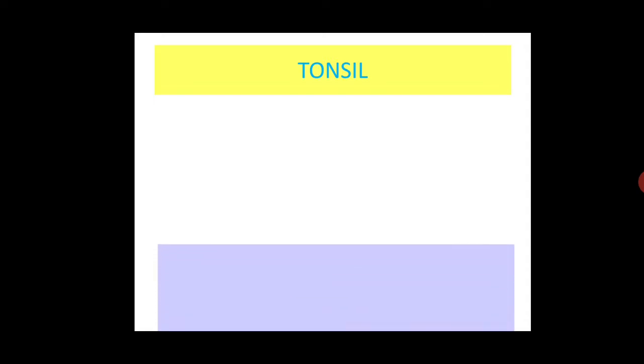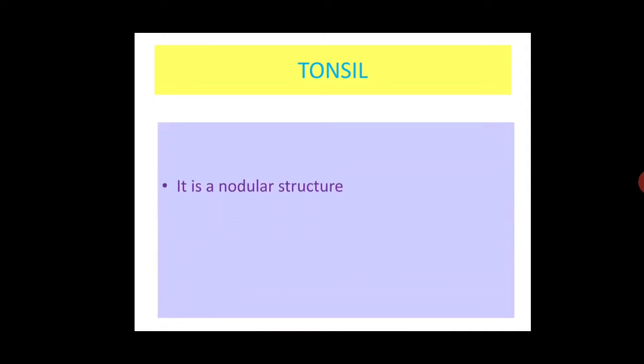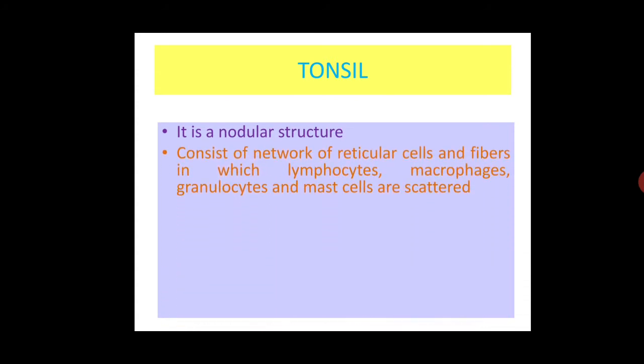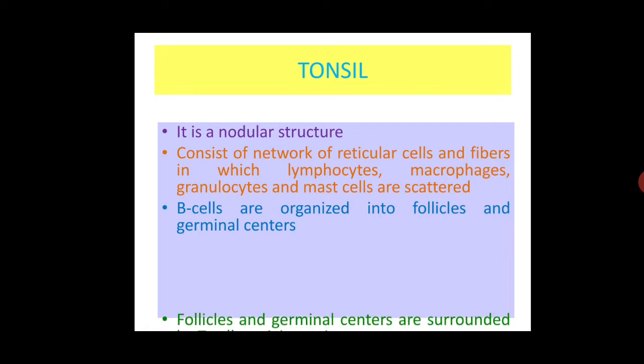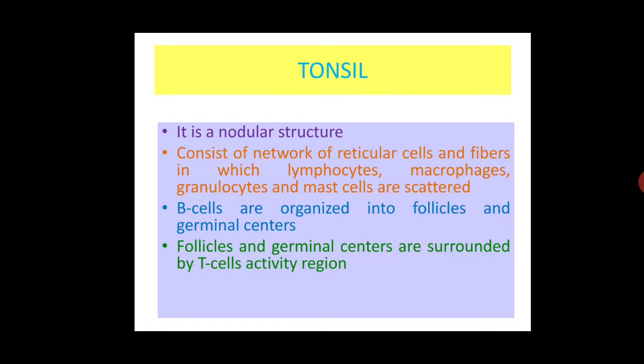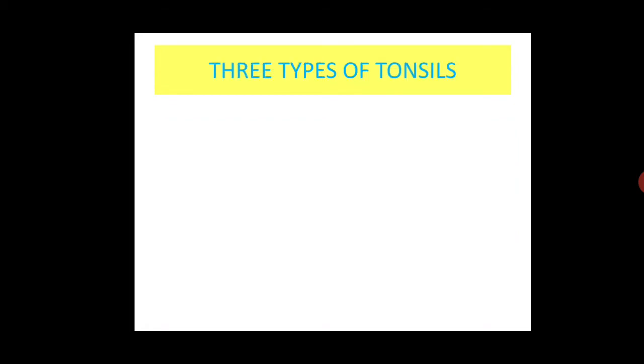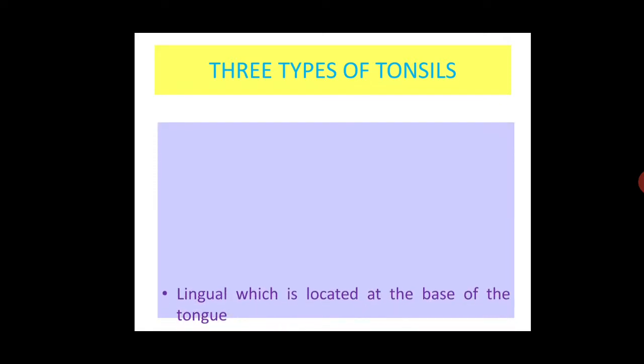Tonsil is a nodular structure and consists of a network of reticular cells and fibers in which lymphocytes, macrophages, granulocytes and mast cells are scattered. B cells are organized into follicles and germinal centers.